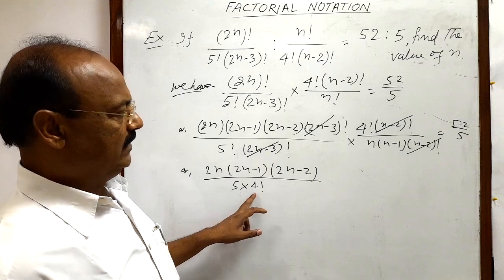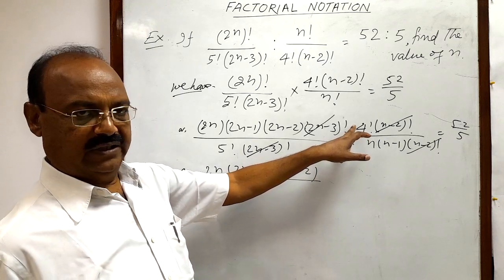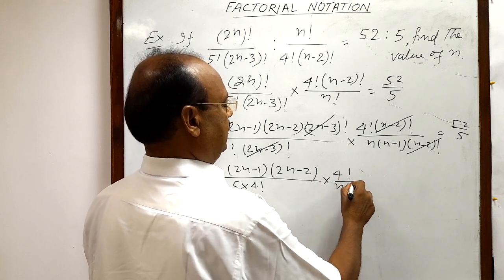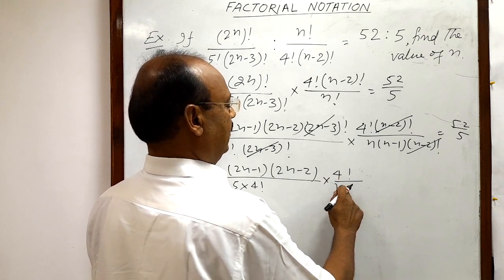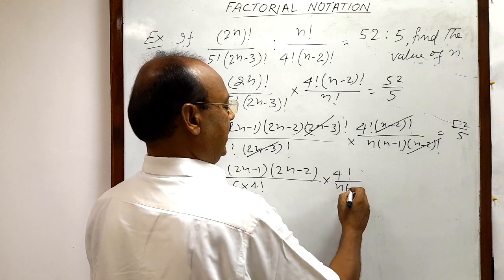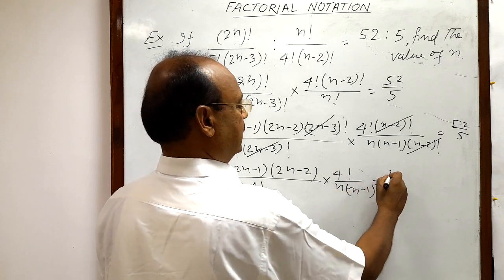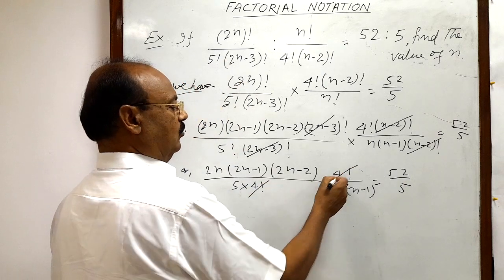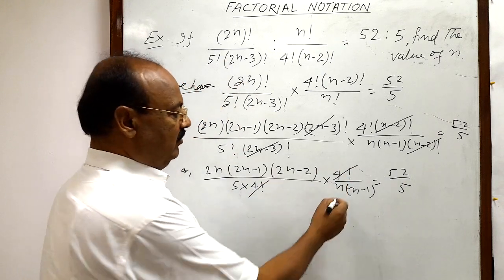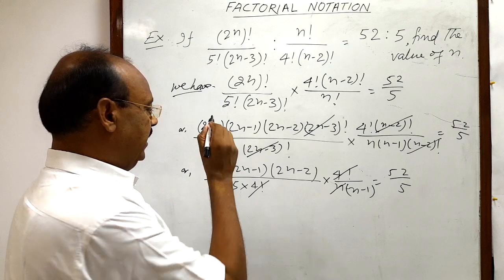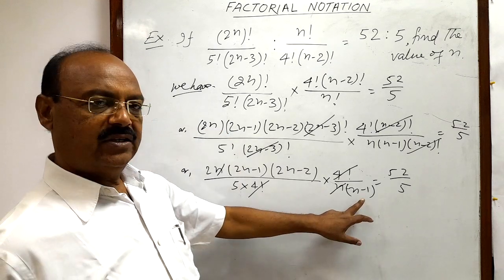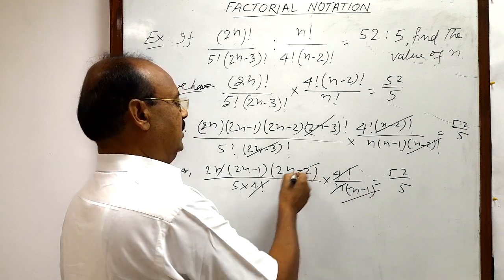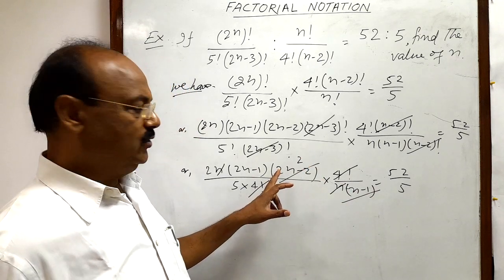So 4! is cancelled out. We also have 4! in the numerator from the other side, so that cancels. We can cancel out n, and (n-1) can be cancelled out as well. When we take 2 common from (2n-2), we get 2 times (n-1), and that (n-1) will cancel with the (n-1) in the denominator.